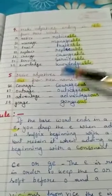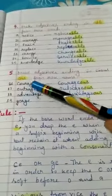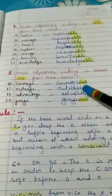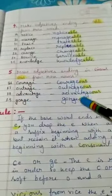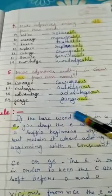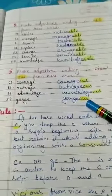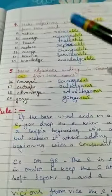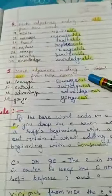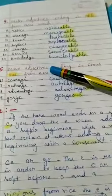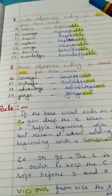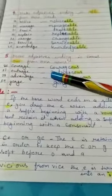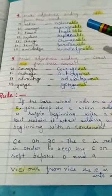Make adjectives ending in -OUS from these nouns. Courage — Courageous. Outrage — Outrageous. Advantage — Advantageous. Gorge — Gorgeous. Here we add suffix -OUS at the end. Please complete these exercises in your copy and learn the rules. Thank you, class.